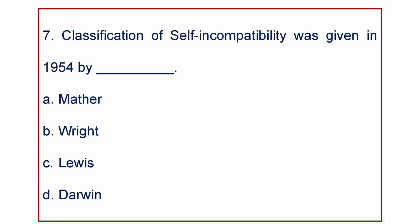Next question. Classification of self-incompatibility was given in 1954 by: A. Mather, B. Wright, C. Lewis, or D. Darwin. The answer is Lewis gave the classification of self-incompatibility.